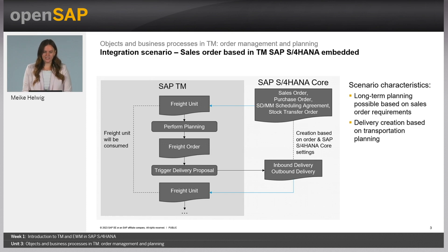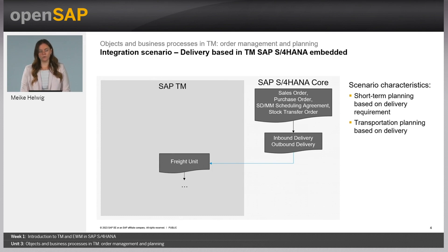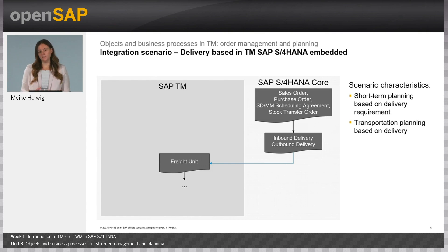We also have the second scenario, which you know from the eLeTra side, where you integrate based on the delivery. Here, you simply create a sales order or a purchase order, and based on this, you create the inbound delivery or outbound delivery, and then you start the planning process in TM. This is more short-term planning. We call it execution-driven — it's more based on the delivery instead of really long-term planning. This also limits you in the planning capabilities, because you're not having so much time for communicating with a carrier or with an ocean shipping line.